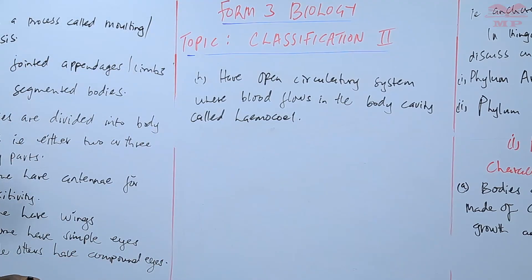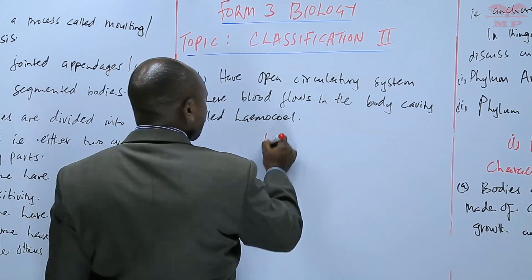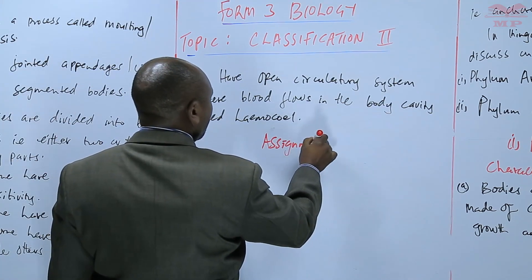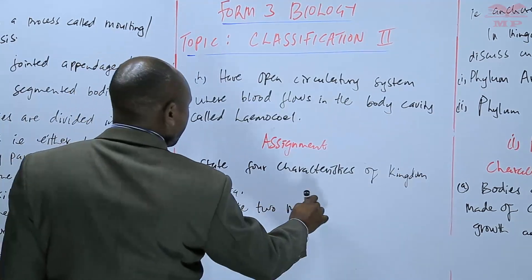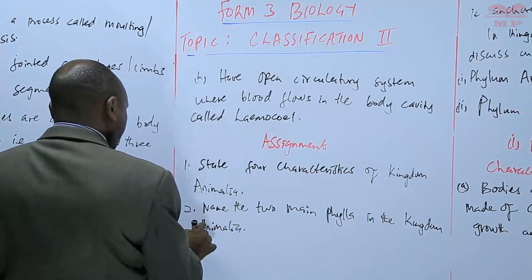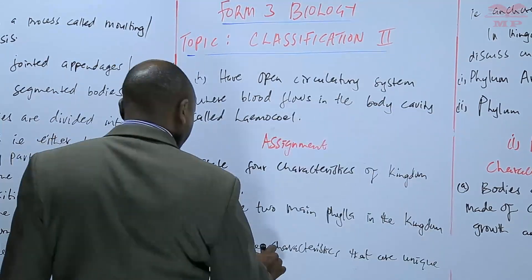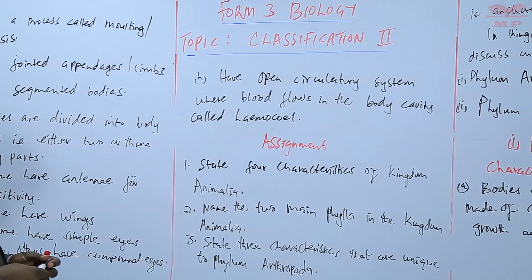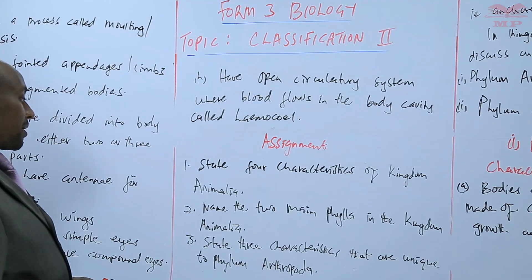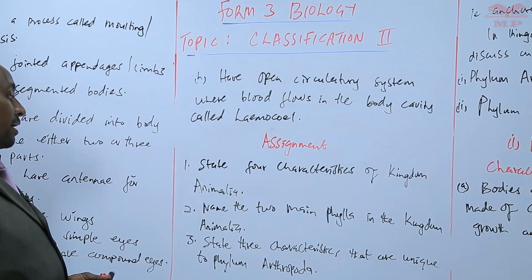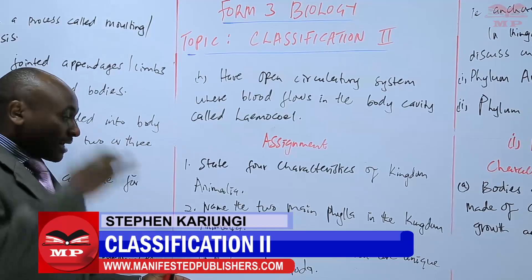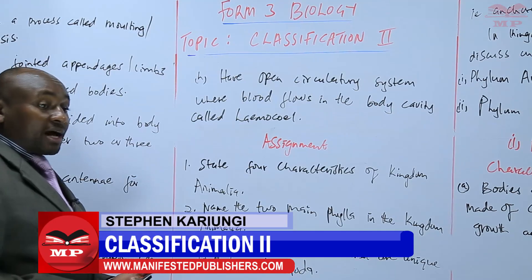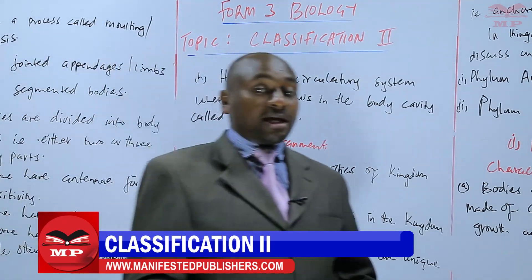So those are some of the characteristics, and at that point we'll have an assignment. The first question: state the characteristics of Kingdom Animalia. Two: name the Kingdom Animalia. And three: state three characteristics that are unique to Phylum Arthropoda. So we'll stop there until next time. Goodbye.